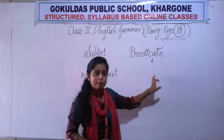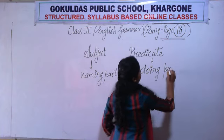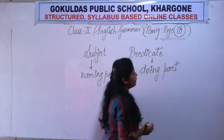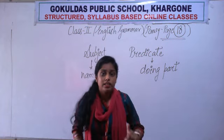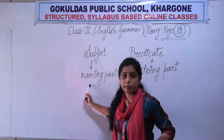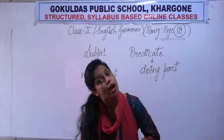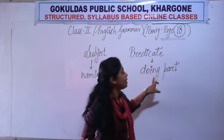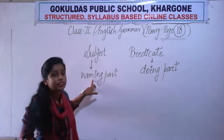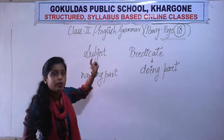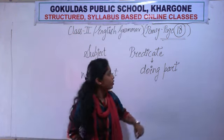Now coming on to the predicate part — what is the predicate part? It is the doing part of a sentence. Naming part is the one that means जिसके बारे में हम sentence में बात कर रहे हैं, अब क्या बात कर रहे हैं वो हमें बताता है — doing part. Doing part tells us what the subject is doing in the sentence.